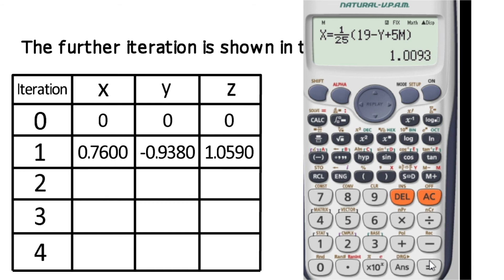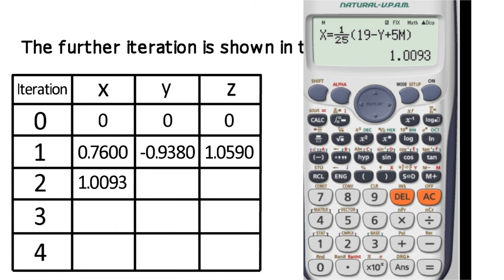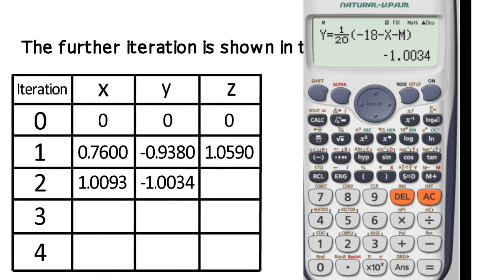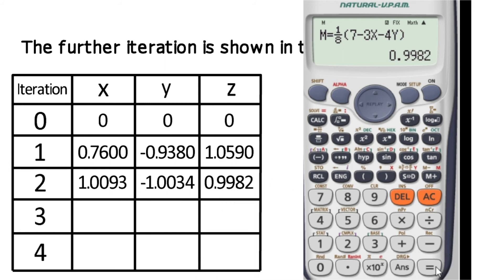For the second iteration, the x value is 1.0093. The second iteration y value is minus 1.0034. The second iteration z value is 0.9982. The values are converging with each iteration.